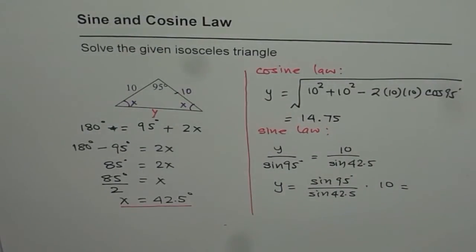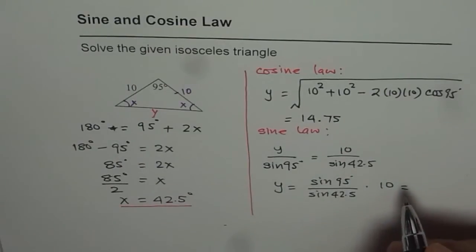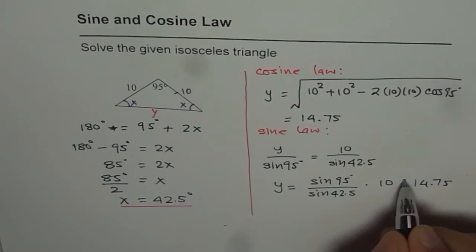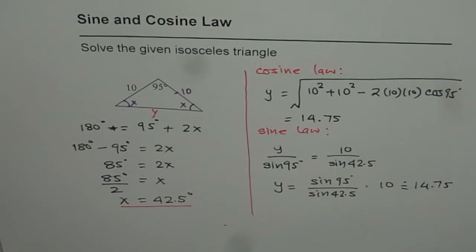And in this case, what do we get? So we will again do the calculation, which is sine of 95 divided by sine of 42.5 times 10. And that gives us 14.745, same answer. 14.75 as rounded. So you get exactly the same answer using either formula.